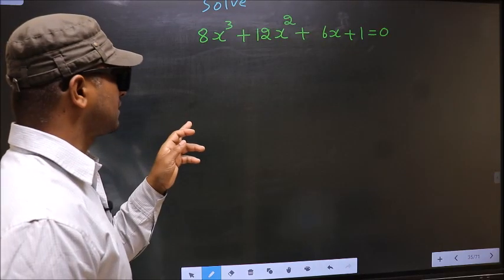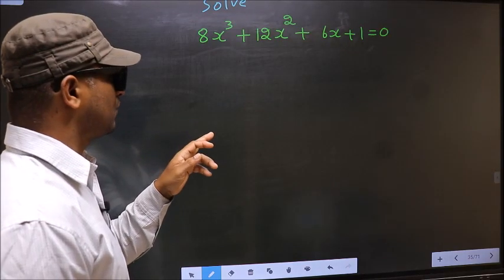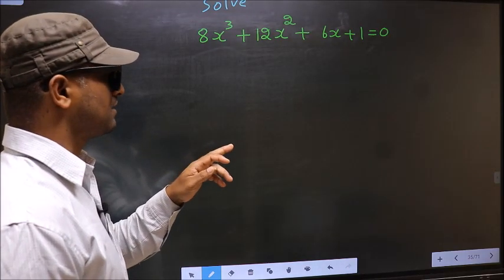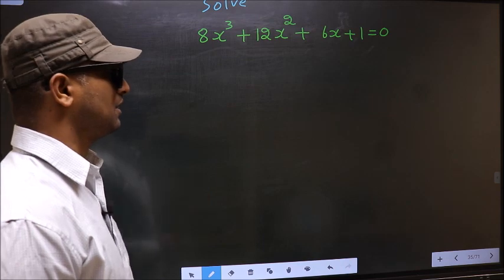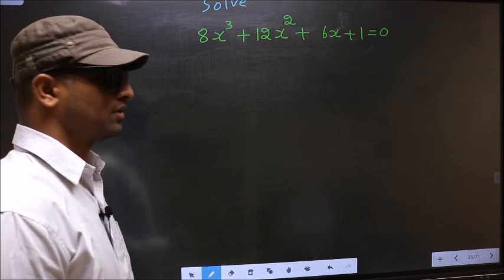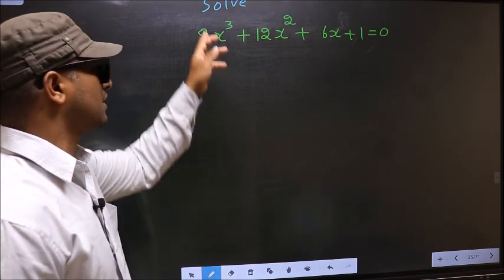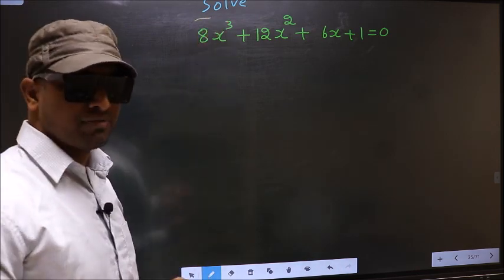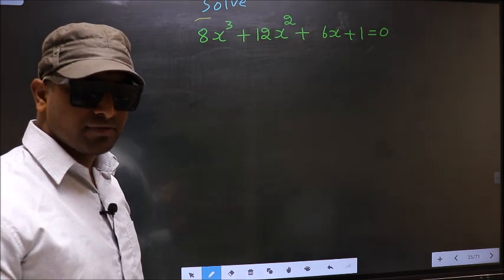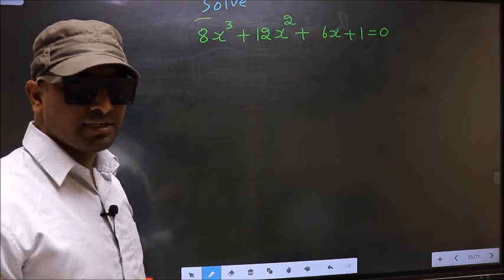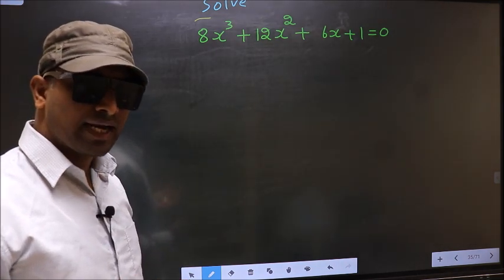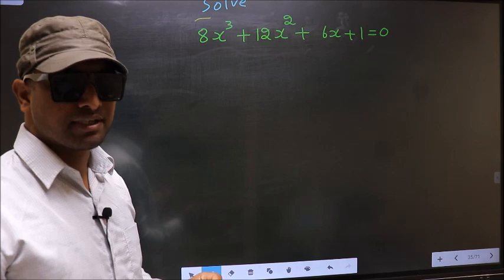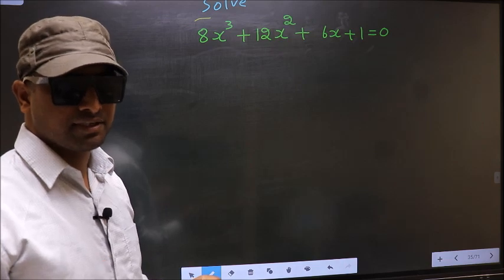Solve 8x³ + 12x² + 6x + 1 = 0. Here they told us to solve, which means we should get the values of x. For that, we have to change the x term.